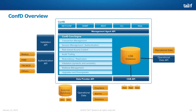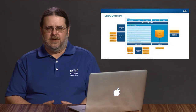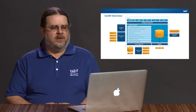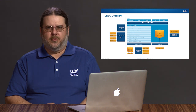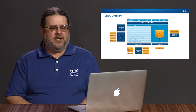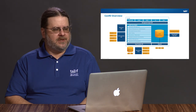ConfD also provides support for upgrades and downgrades. Your data models can be changed — to ConfD, it's a data model change. Those data model changes will be automated to drive schema changes in the CDB database as well as re-rendering northbound interfaces. ConfD provides support for both cold restart data model changes and also hot in-service data model changes as necessary.